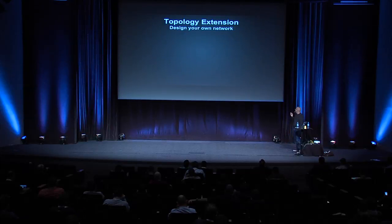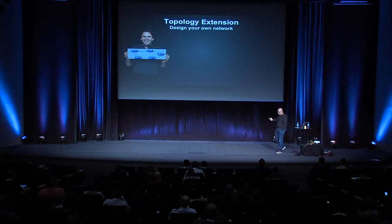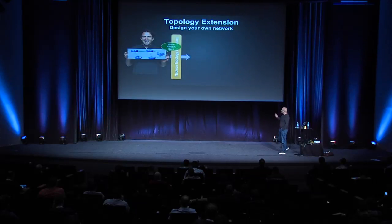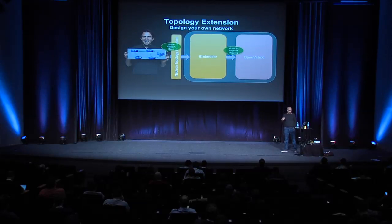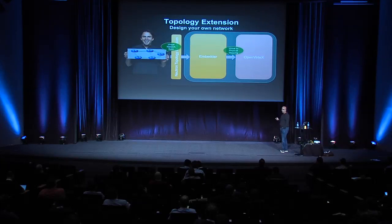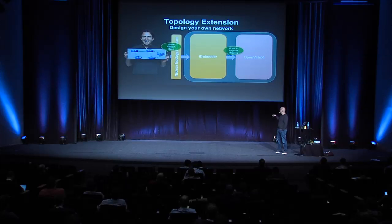Let's look at how we could do topology extension. You design a virtual topology, pass that network specification to the Neutron topology extension, which passes it to our embedder — currently a very simple embedder. It creates the virtual-to-physical switch mapping that is passed to OVX, which will implement and spawn the virtual network on the data plane.